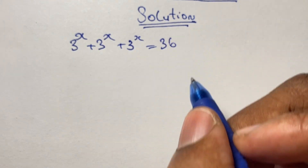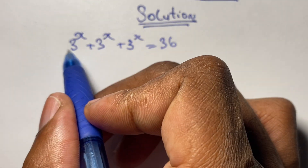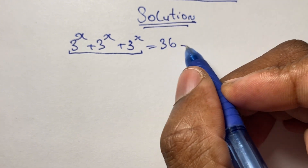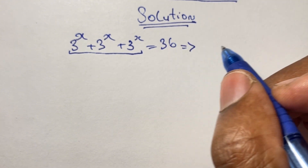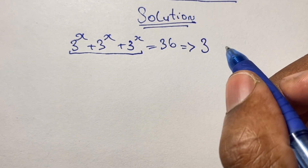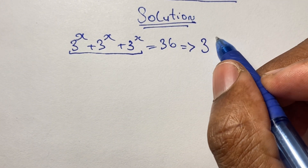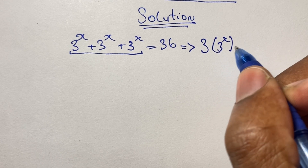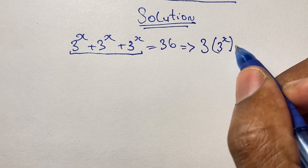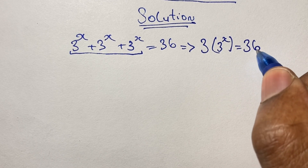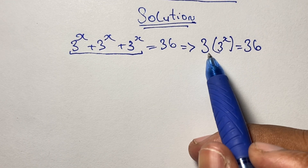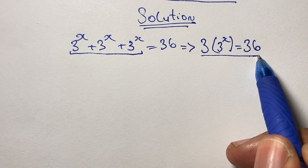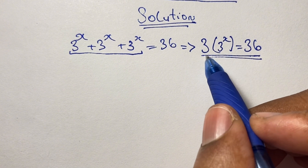We can start solving our equation by simplifying the expression. Since simplifying this equation, we can rewrite it as 3 times 3 to the power of x is equal to 36. So now we have our equation simplified as 3 times 3 to the power of x equals 36.